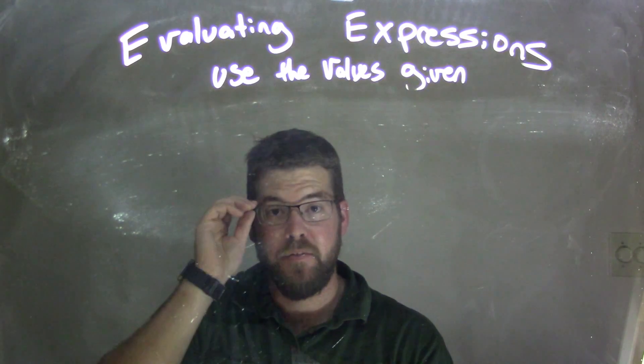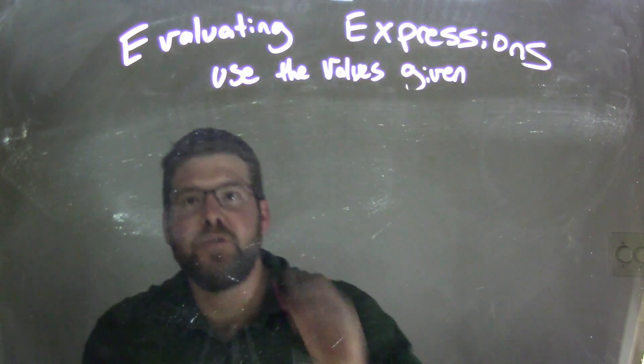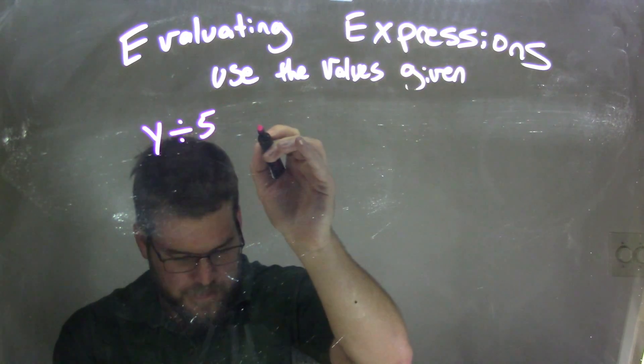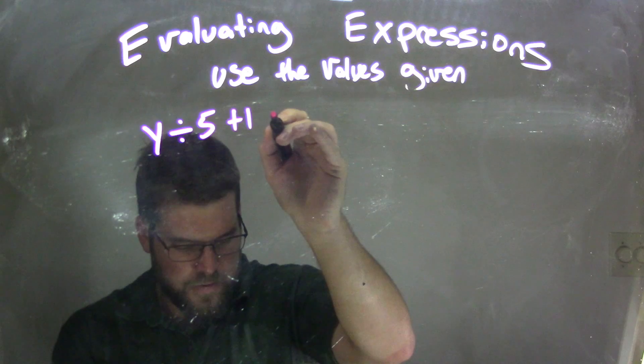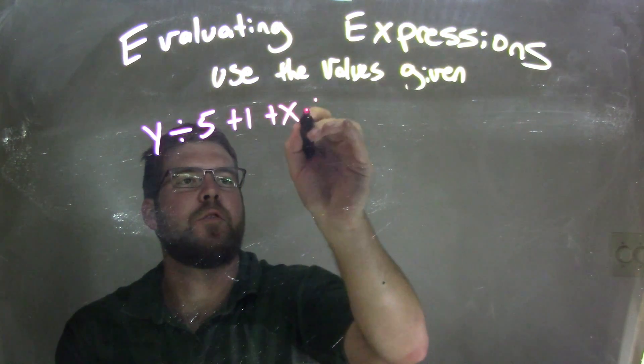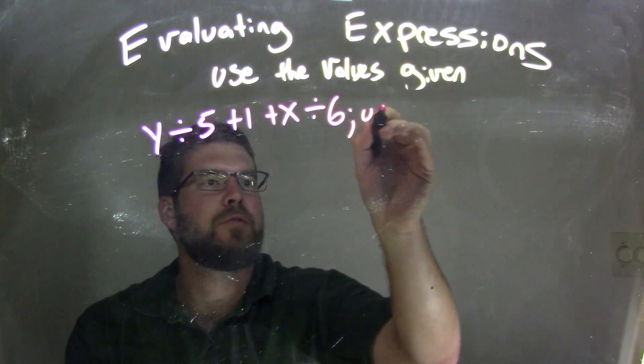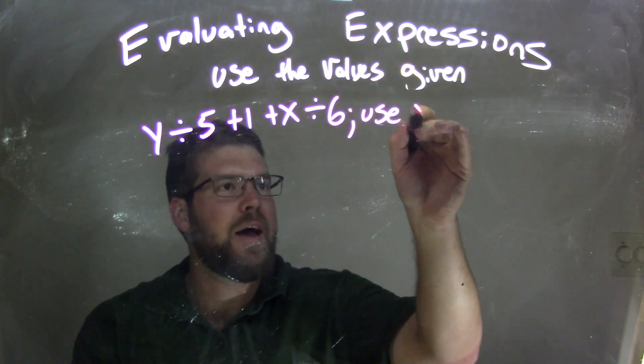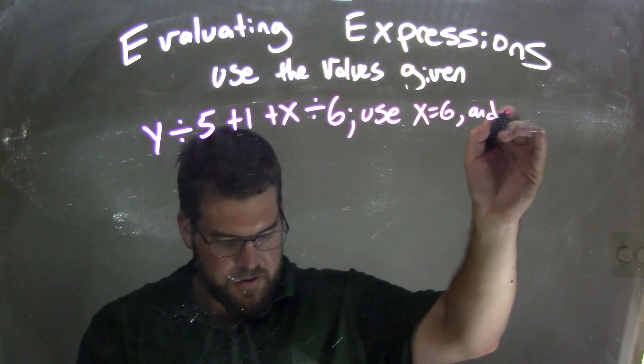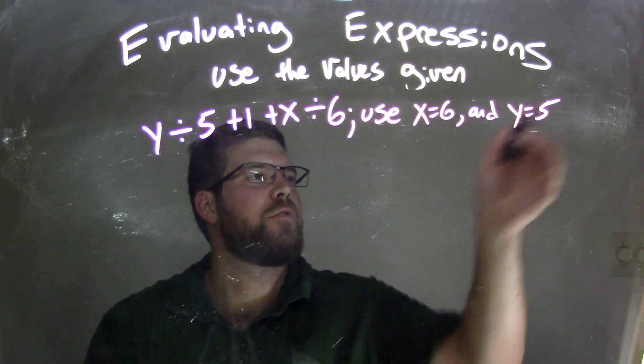We're going to use the values given. So if I was given this expression: y divided by 5, plus 1, plus x divided by 6, and we're going to use x equals 6 and y equals 5.